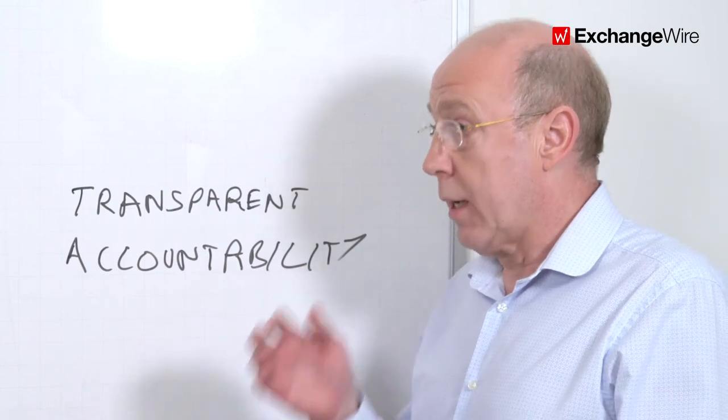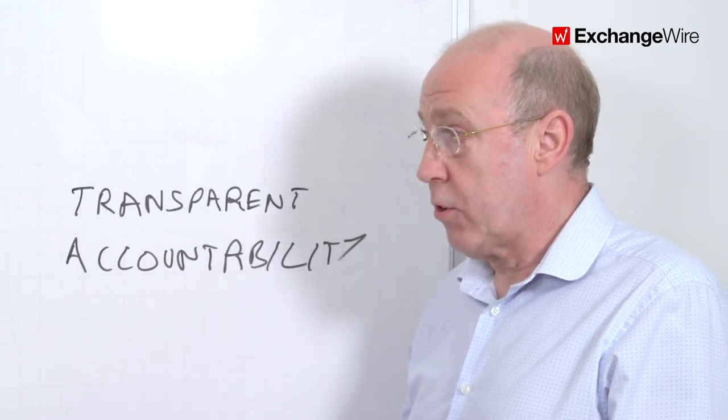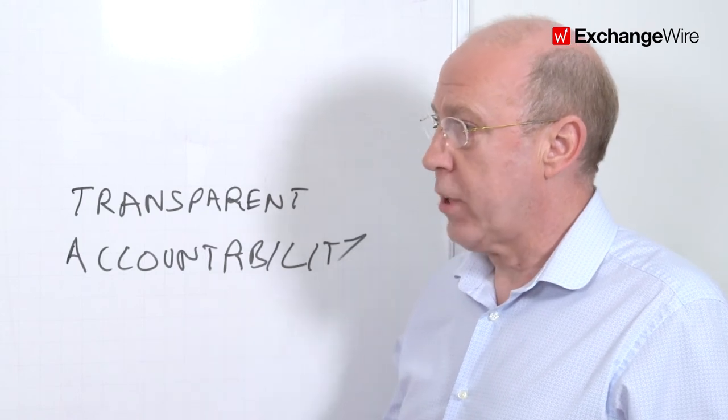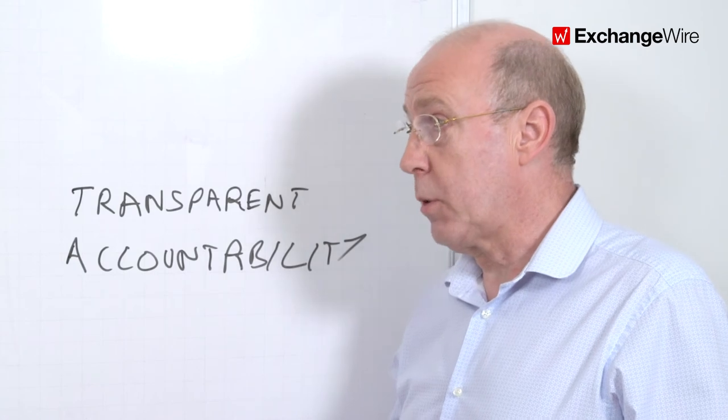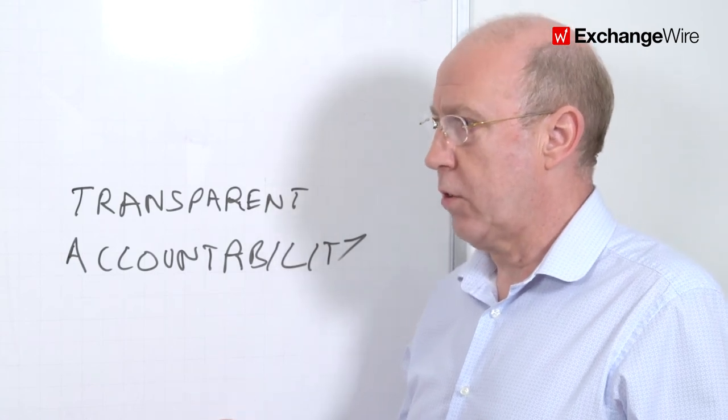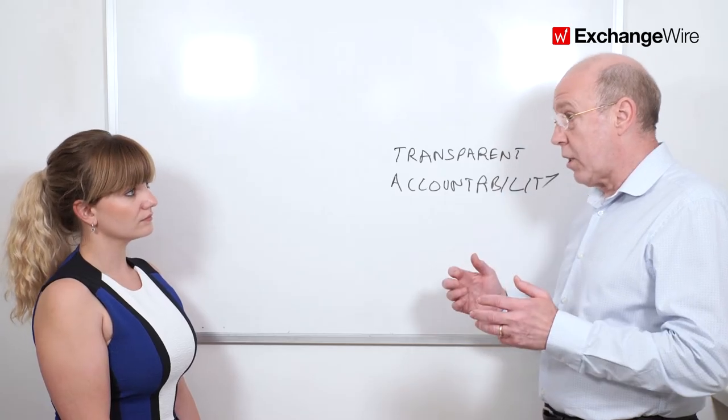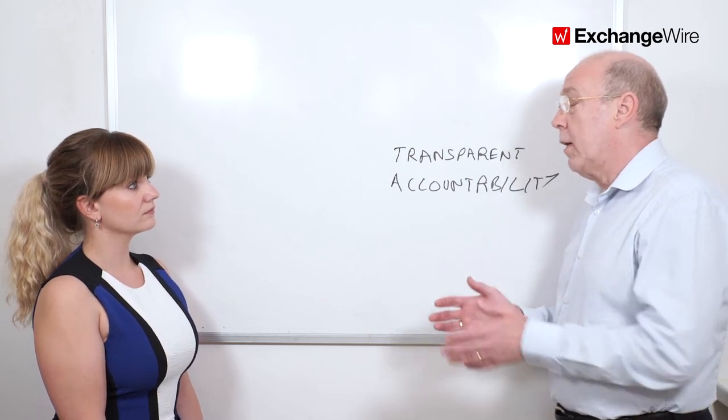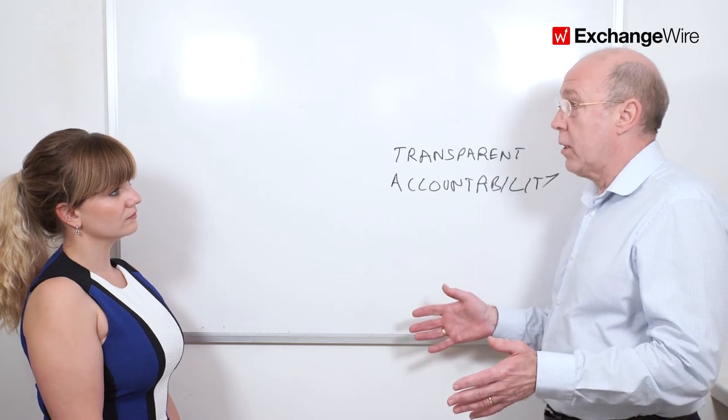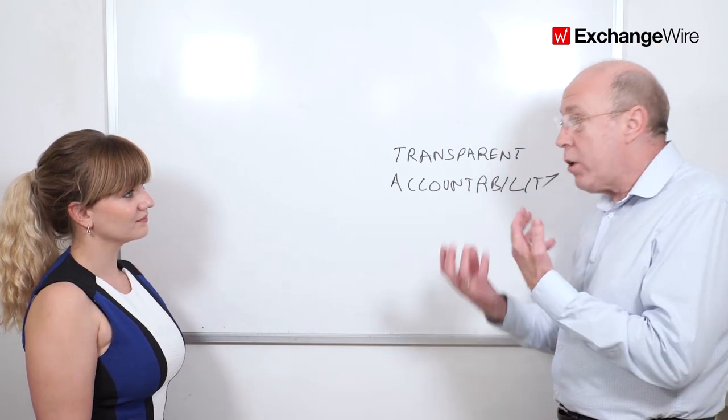Mandatory reporting of data breaches comes in, not only that, for all companies, so it's the private sector as well, but you're going to have to report it to the data protection authority, the supervisory authority, within 72 hours. Loads of companies are still trying to define during 72 hours what's happened. And also, it always happens at six o'clock on a Friday night. So how are you going to cope?